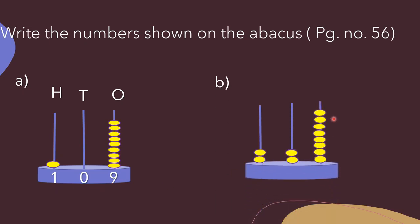In part B, we write the places: ones, tens, hundreds. Counting beads at ones place: 1, 2, 3, 4, 5, 6, 7, 8 — that is 8. At tens place there are 2 beads, so we write 2. At hundreds place there are also 2 beads. So the number is 228.